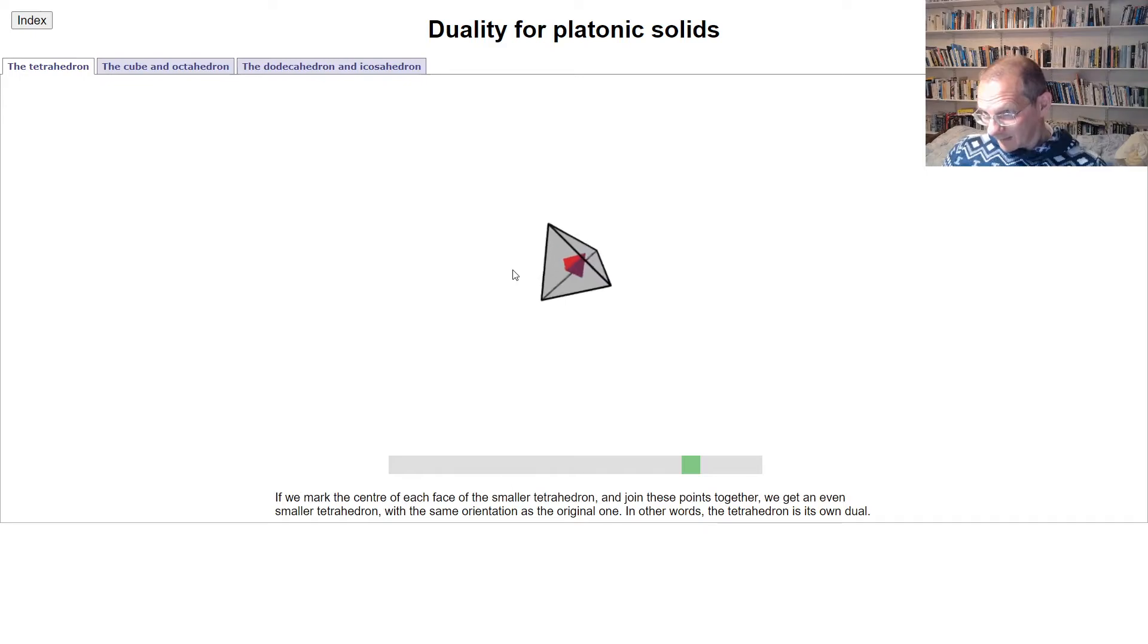It's just shrunk down and it's considerably smaller than we started with in the first place. And the word that's used to describe the situation, we say that the tetrahedron is its own dual. The dual of the tetrahedron is the thing that you get by connecting together the midpoints of the faces of the tetrahedron. But that is just a tetrahedron again, so tetrahedron is dual to itself.